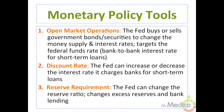The second tool is the discount rate. The Fed can increase or decrease the interest rate it charges banks for short-term loans. When the Fed lowers the discount rate, the money supply increases; when it raises the discount rate, the money supply decreases. The third tool is the reserve requirement. The Fed can reduce the reserve ratio, which means banks can lend more of their excess reserves to increase the money supply. It can also raise the reserve ratio, which reduces a bank's excess reserves and the money supply.